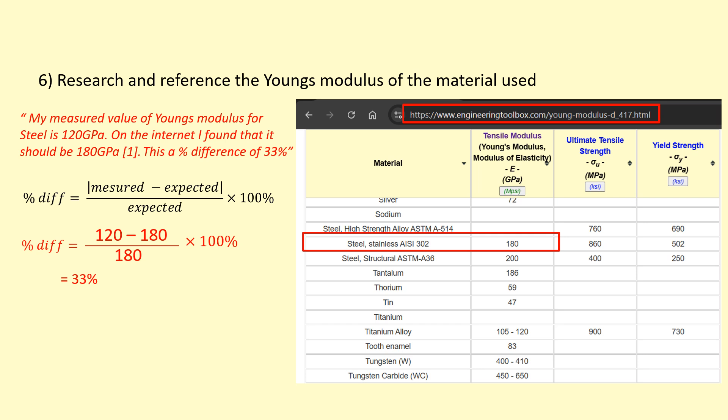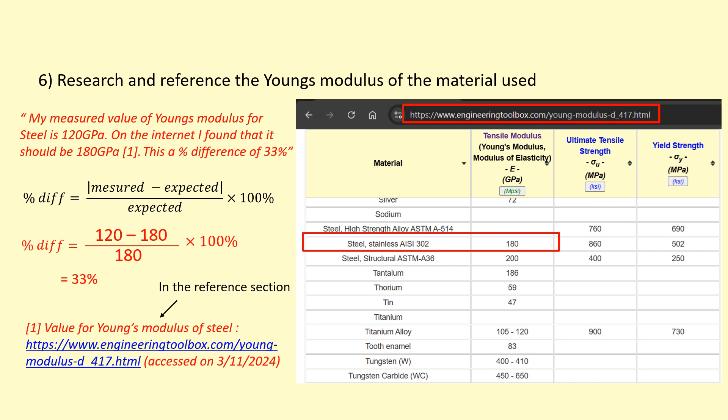Finally, you need to make sure that's why I wrote those square brackets with the one, because I'm going to reference where I got the 180 gigapascals. I'm going to give something like this in the reference section, which is the link to the website that I used and also the date that I accessed that website.